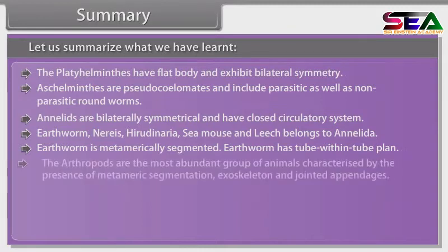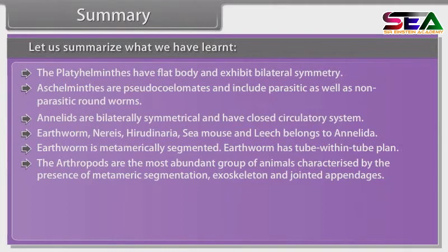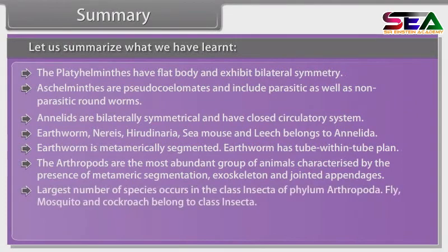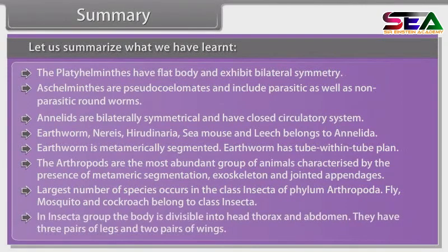Arthropods are the most abundant group of animals, characterized by metameric segmentation, exoskeleton and jointed appendages. The largest number of species occurs in the class Insecta of phylum Arthropoda. Fly, mosquito and cockroach belong to class Insecta. In the Insecta group the body is divisible into head, thorax and abdomen, with three pairs of legs and two pairs of wings.